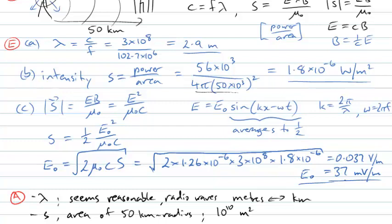For the electric field amplitude, 37 millivolts per metre might seem particularly small compared to other fields you've calculated. It's worth checking offline what signal strength a radio receiver can actually amplify. A useful comparison is a mobile phone, which operates on similar technology. This is indeed a large enough signal that a standard radio receiver can receive an electric field of this amplitude and amplify it to produce an audible radio signal.